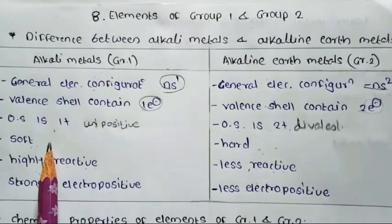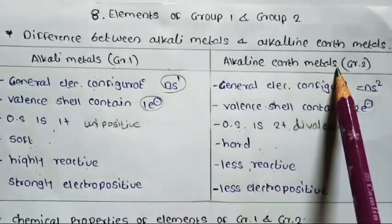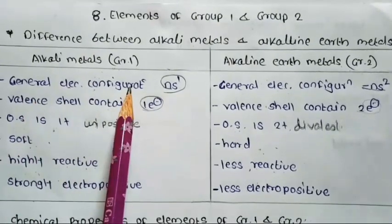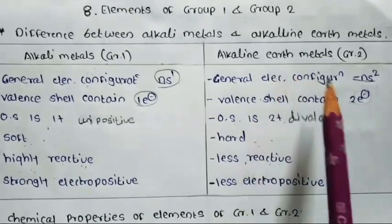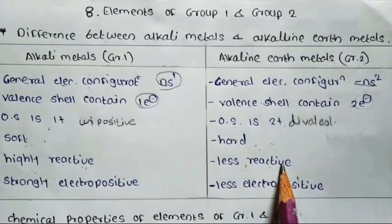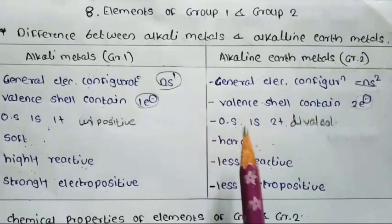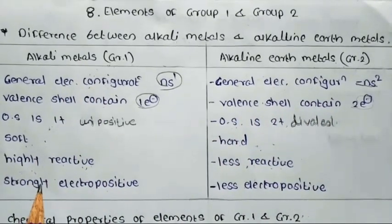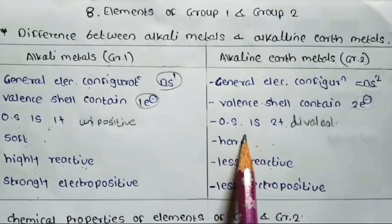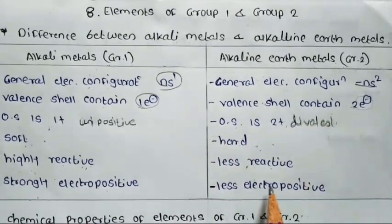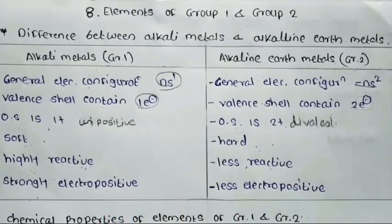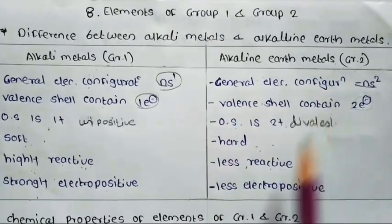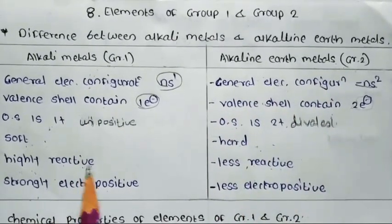Alkali metals are soft in nature, while alkaline earth metals are harder in nature. Alkali metals are highly reactive in nature, but alkaline earth metals are less reactive. The reactivity of alkaline earth metals is less than that of alkali metals. Alkali metals are strongly electropositive in nature, and alkaline earth metals are less electropositive in nature compared to alkali metals.